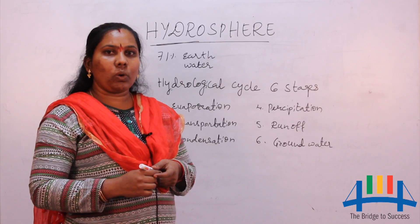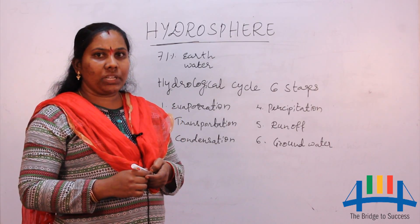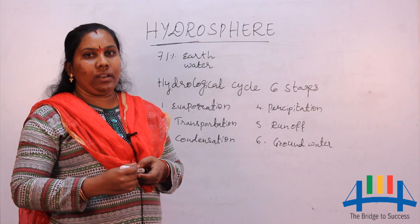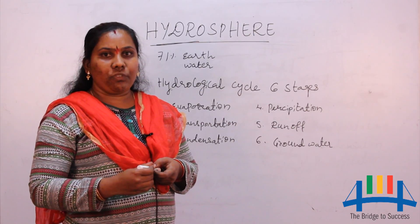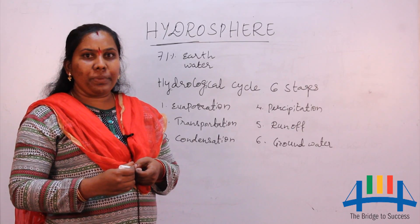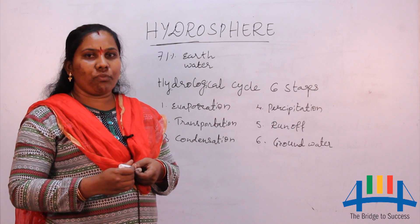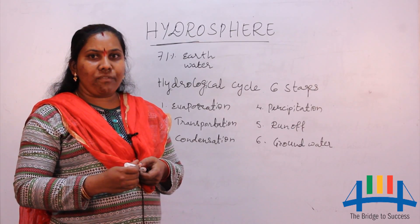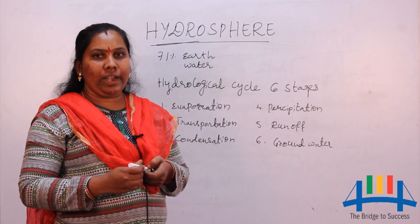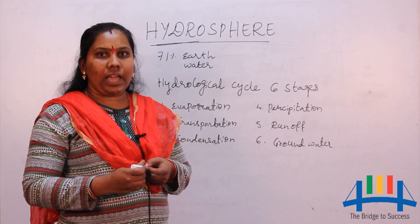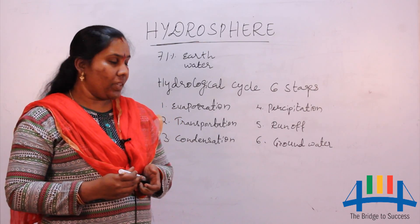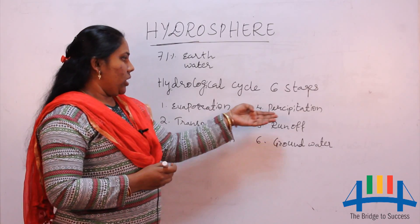The third stage is condensation, where the clouds interact with the atmosphere and cool down, forming tiny droplets of water. For example, in a hot vessel, if you place a lid, after a few minutes you can find droplets of water on it. In the same way, when water vapor cools down in the atmosphere, it forms tiny droplets of water.